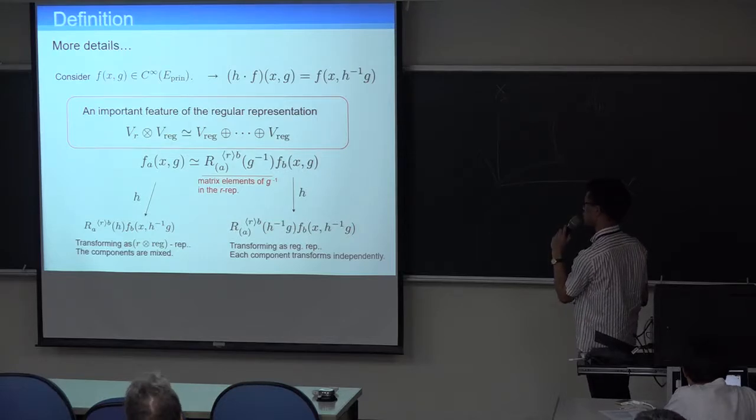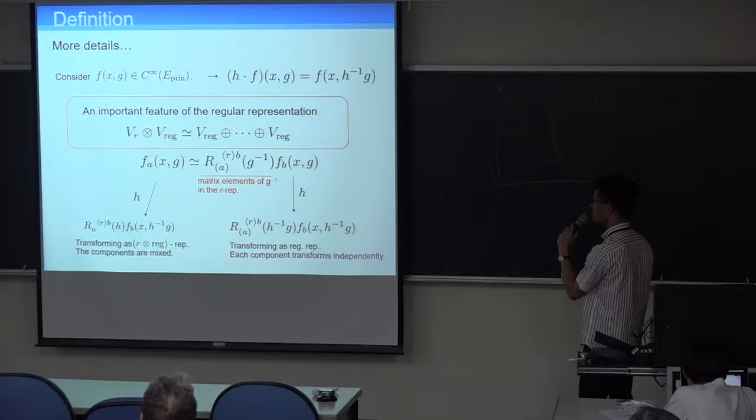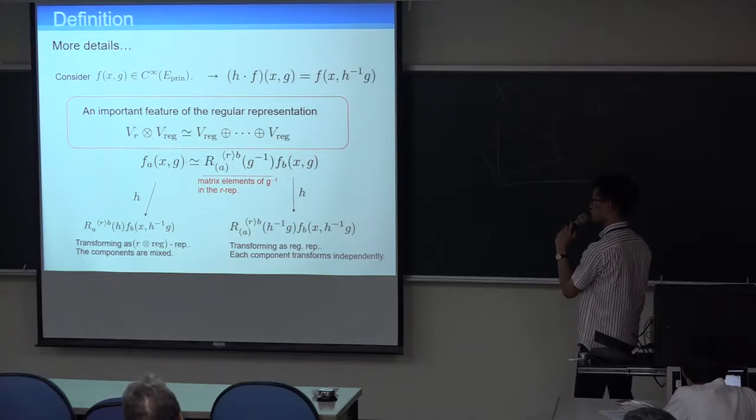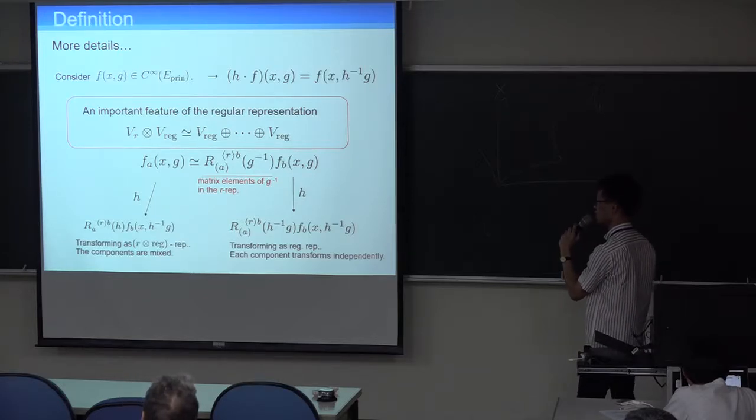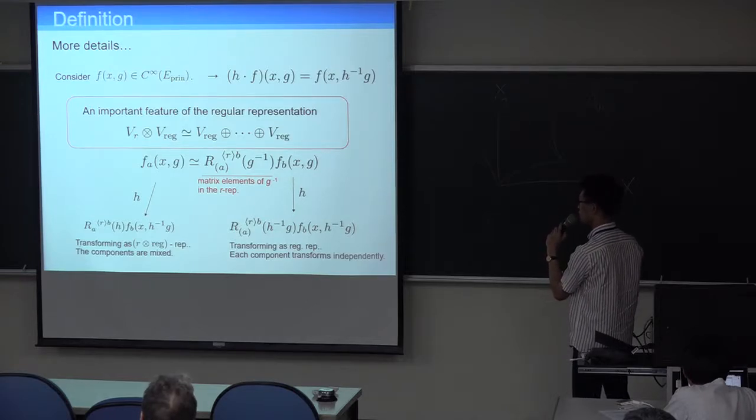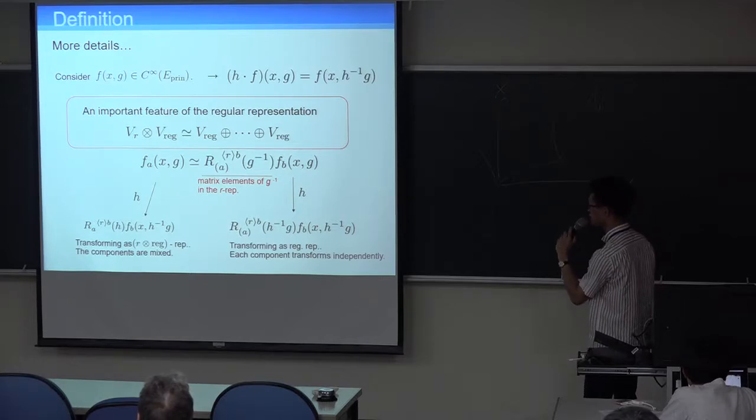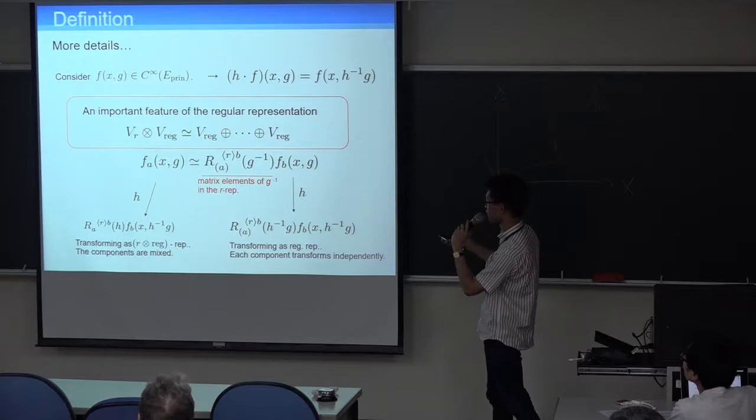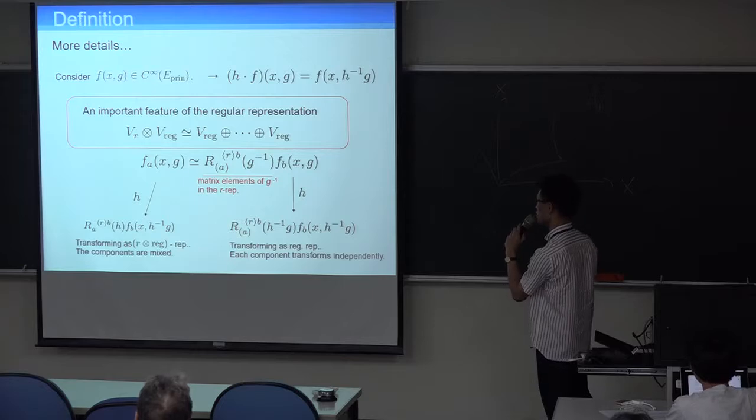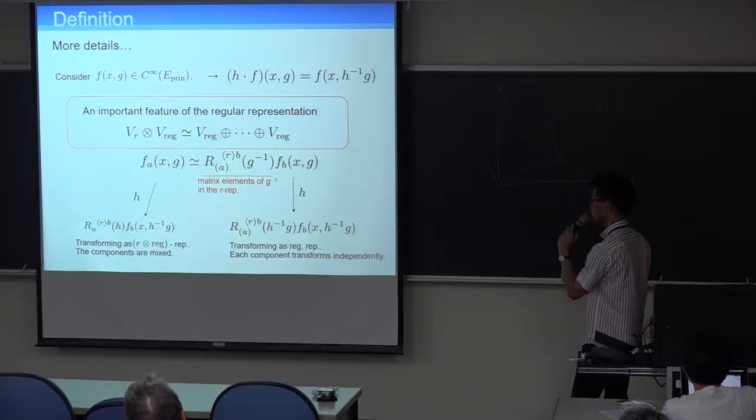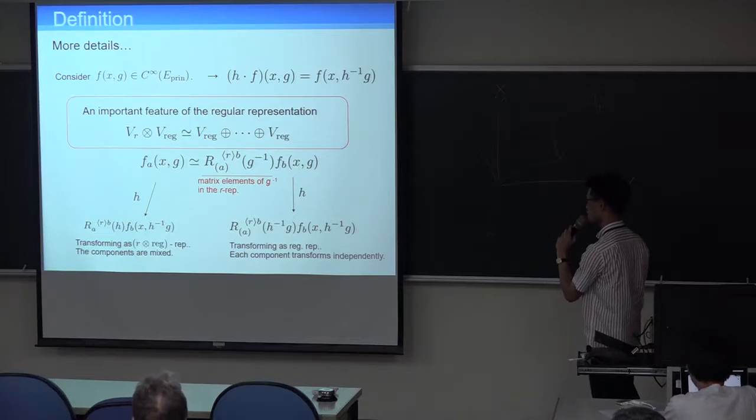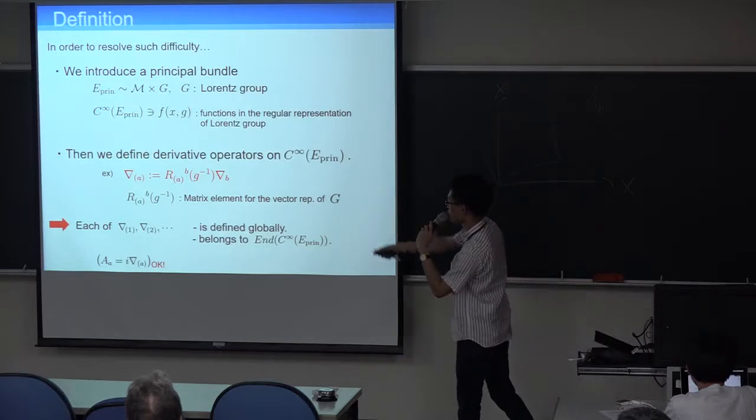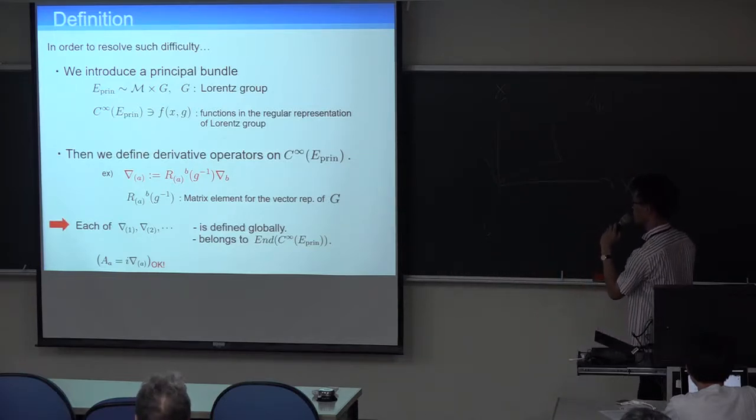For more detail, consider the function of regular representation. And an important feature of the regular representation is that if one considers the tensor product of some irreducible representation and regular representation, it is isomorphic to direct sum of regular representations. This is the isomorphic, concrete expression of isomorphism. And here's the matrix element of irreducible representation, and here's the matrix element of irreducible representation where it works as a Clebsch-Gordan coefficient.